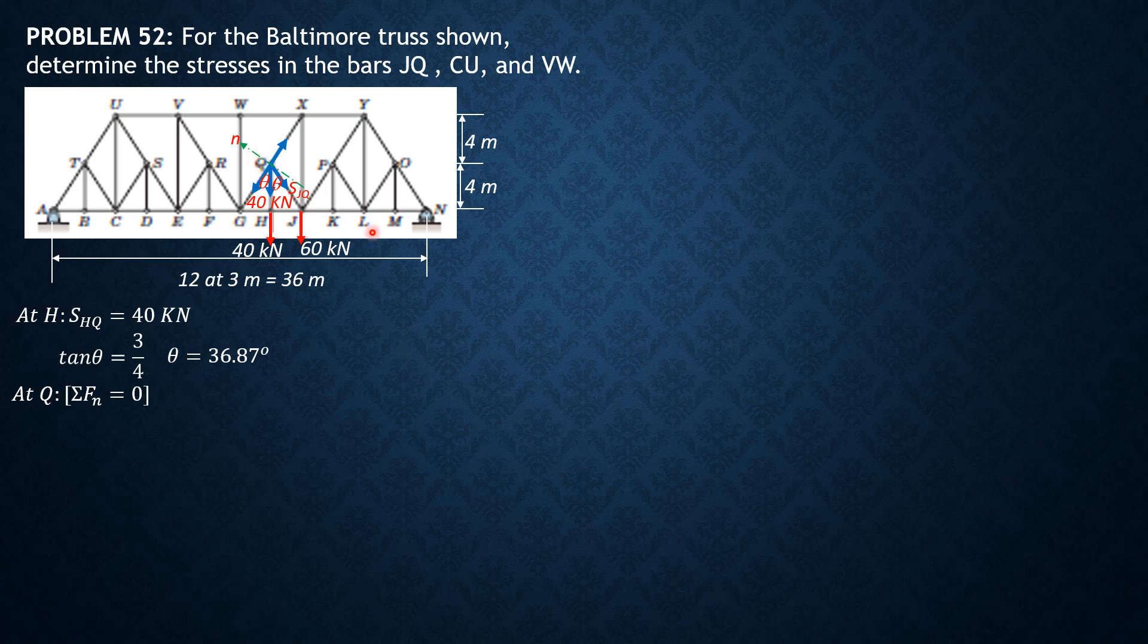Everything is going in the opposite direction. So negative SJQ, the angle it makes with the horizontal is 2 theta, so negative SGQ sine of 2 times 36.87, then negative 40 times sine of theta 36.87 equals 0. From here, we can compute SJQ equal to negative 25.00 kilonewtons, or SJQ is 25 kilonewtons compression.